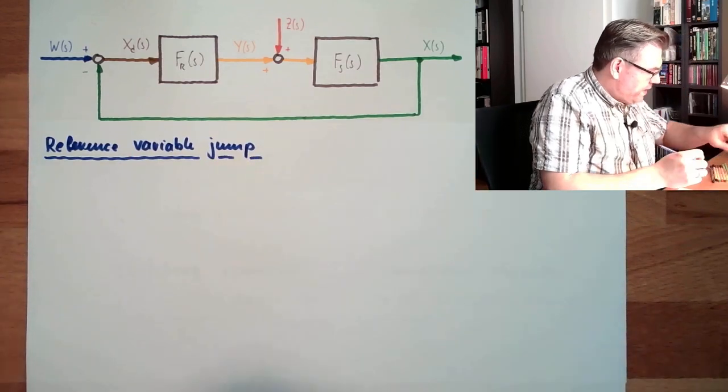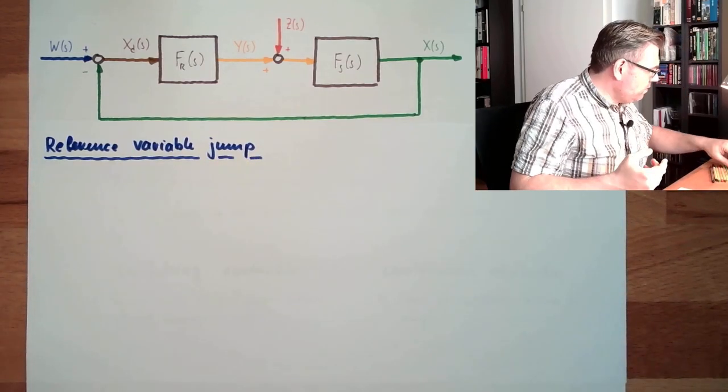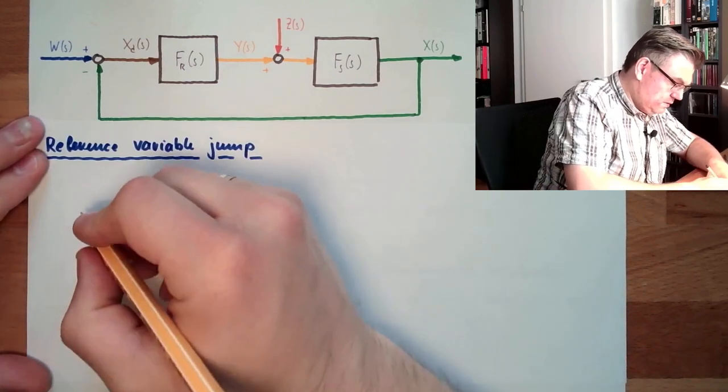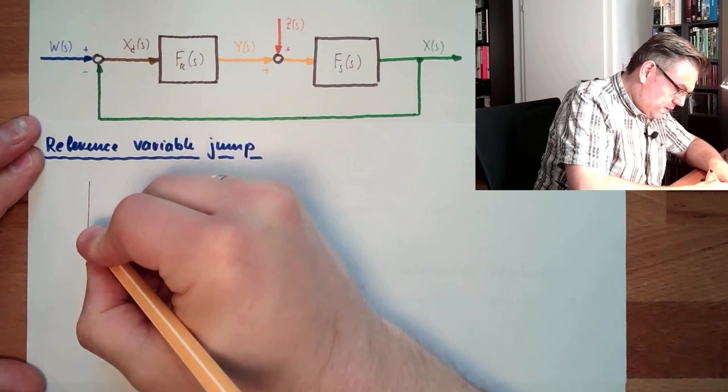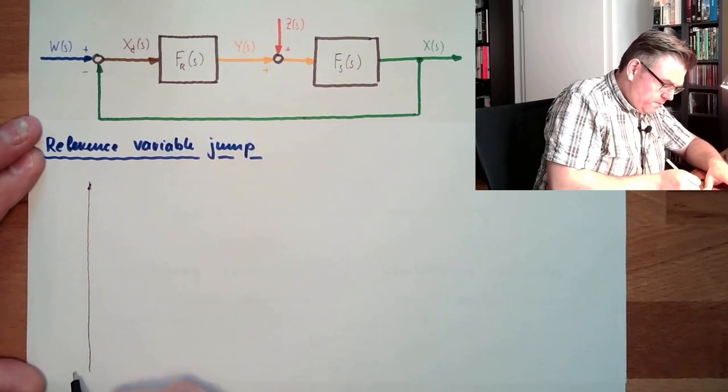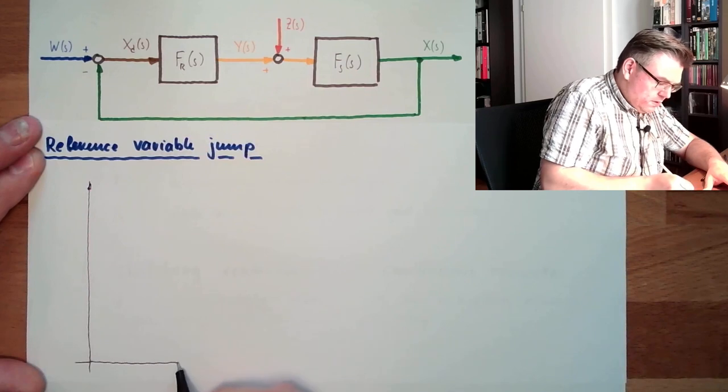Make again a little diagram here, what I'm talking about, to see which values we can read out of this. So this is again the different parameters here. Here is the time.